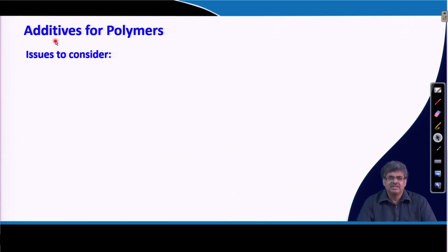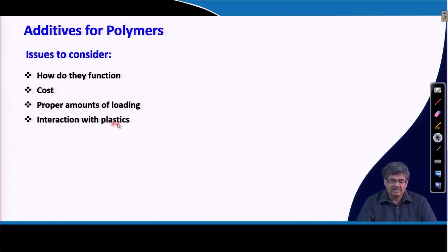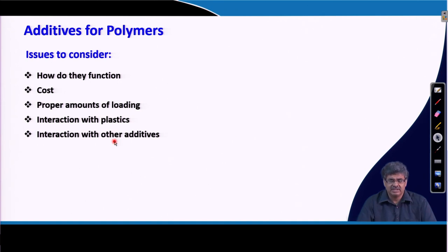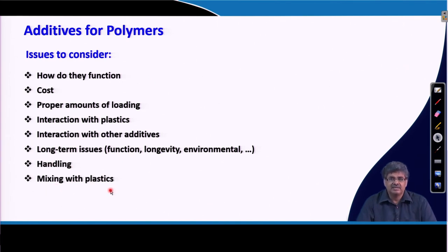There are some issues to be considered when we design or add additives to polymer samples: how do they function, what is the cost, and the proper amount of loading needs to be added so that it performs its function without deteriorating the base polymer. How the additives interact with the base polymer, interaction with other additives if multiple are present, long-term effects on base polymer properties such as longevity and environmental aspects, and how well they mix with the base plastics.